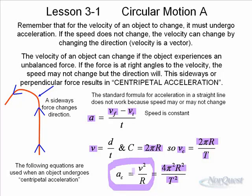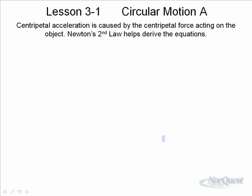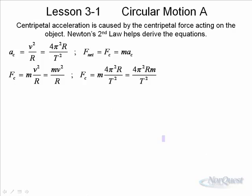The velocity will remain the same, but as the object goes in that circular path, it is accelerating towards the center of the circle. The following equations are used when an object undergoes centripetal acceleration: v²/r, or sometimes 4π²r over T². Centripetal acceleration is caused by the centripetal force acting on the object, and Newton's second law helps derive these equations.